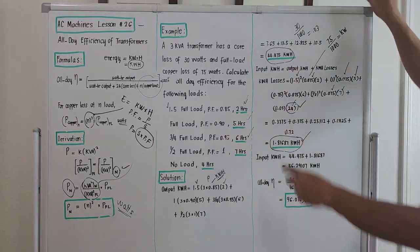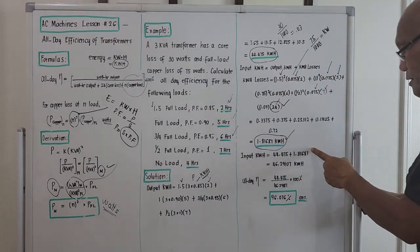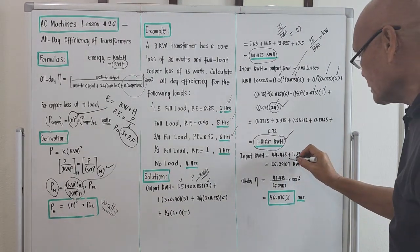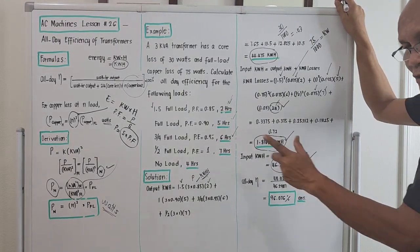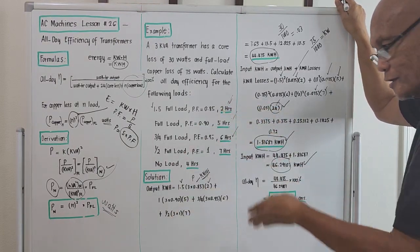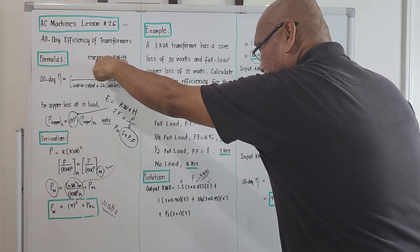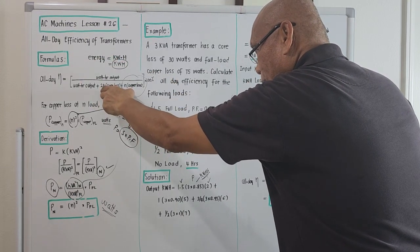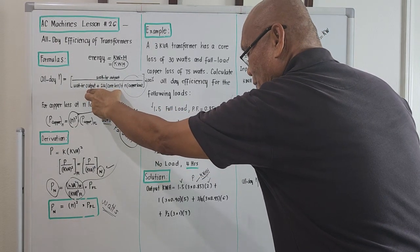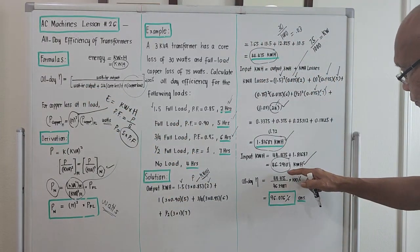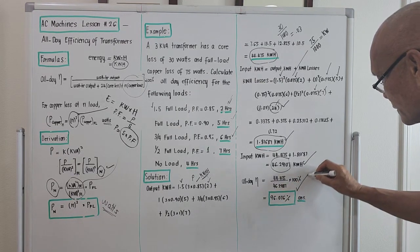The input kilowatt-hours are 44.475 + 1.81687 = 46.29107 kilowatt-hours. The all-day efficiency is therefore 44.475 divided by 46.29107, which equals 96.076 percent.